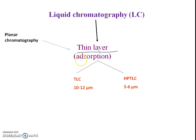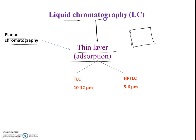Thin layer chromatography works on the basis of adsorption — a thin layer of adsorbent onto a planar surface. It is a planar chromatography, and since liquid serves as the mobile phase, it is also a type of liquid chromatography. In TLC, the adsorbent particle size is in the range of 10 to 12 micrometers, whereas HPTLC — high performance thin layer chromatography — uses a particle size of 5 to 6 micrometers.